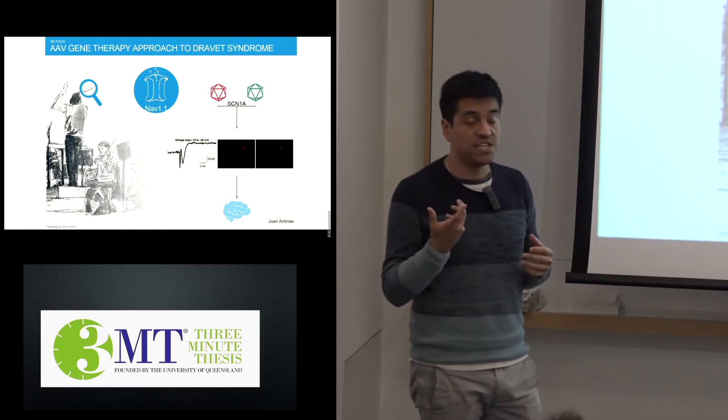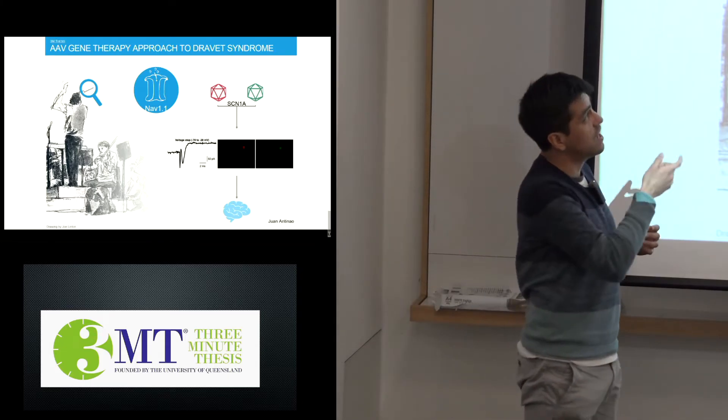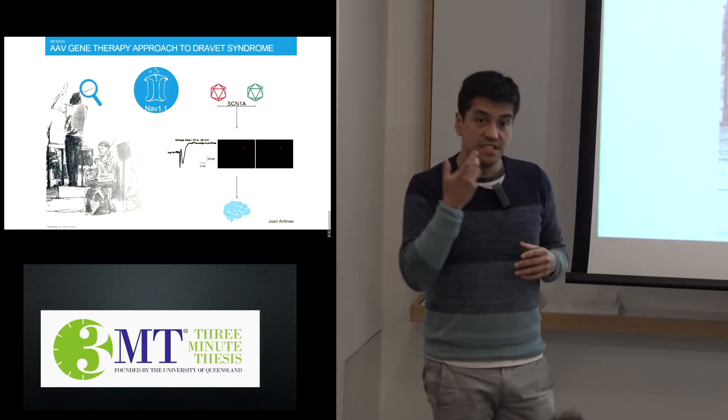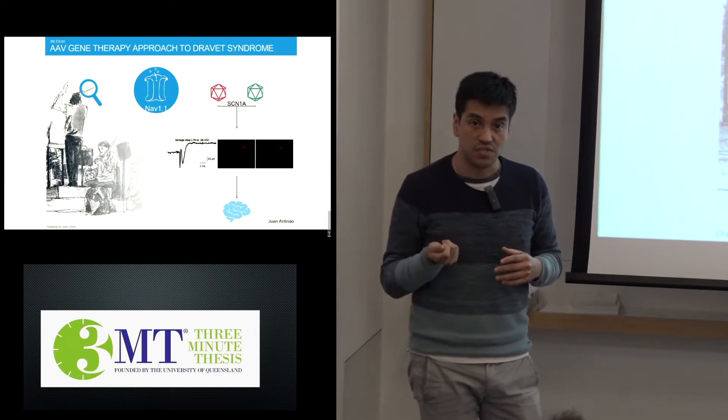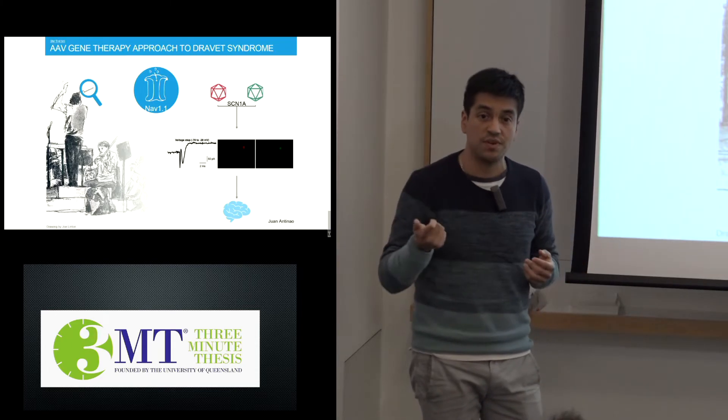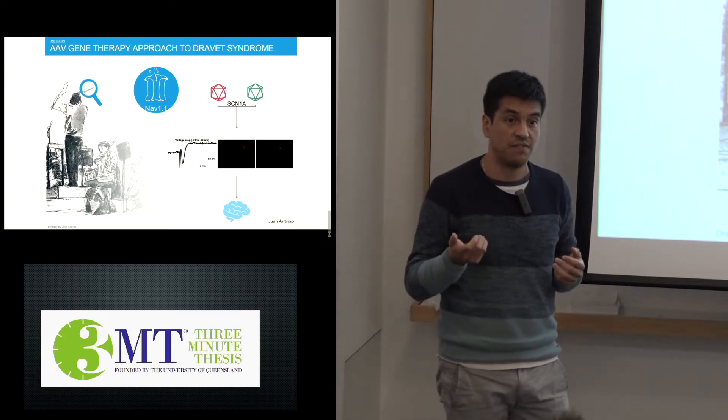In Dravet syndrome, a mutation in the STN1A gene which encodes the ion channel NAV1.1 renders this protein non-functional. That means that the inhibitory neurons are losing their baton and their ability to coordinate brain function.